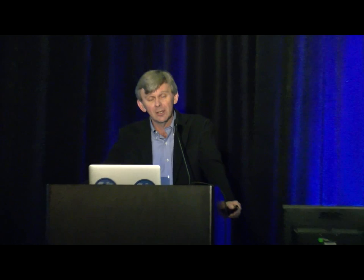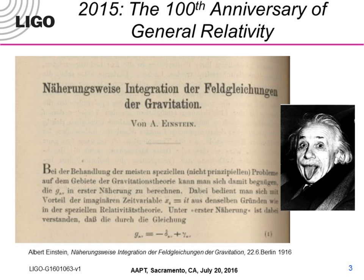It's a remarkable story that goes back about 100 years ago. I want to give you a little bit of background on gravity, general relativity, and gravitational waves. This is my favorite picture of Albert Einstein — it shows that he's a bit of a comic. This paper is the seminal paper that Einstein wrote in 1915, where he basically turned the world of gravity on its head by coming up with a theory of gravity that no longer needed action at a distance — Newtonian gravity — but explained it in terms of something called geometry.